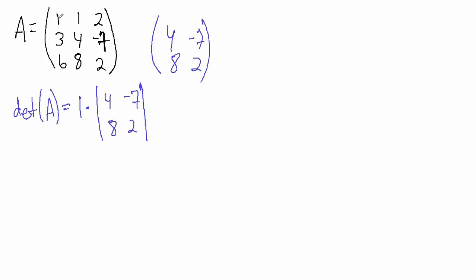We're taking the 1 in the first row in the first column, then because the 1 is in the first row in the first column, we're ignoring the first row, first column, looking at what's left — these four values: 4, negative 7, 8, and 2 — and we multiply the 1 by the determinant of that matrix.